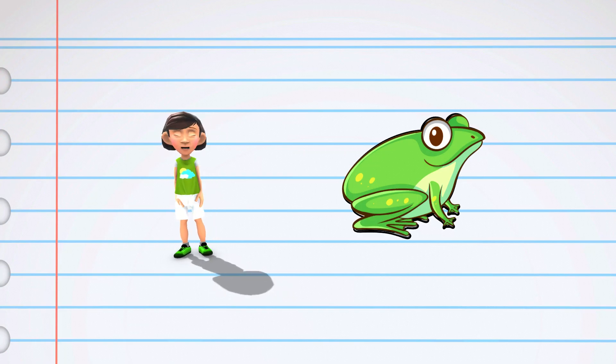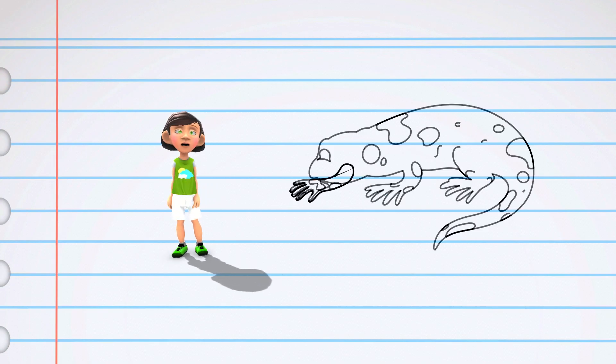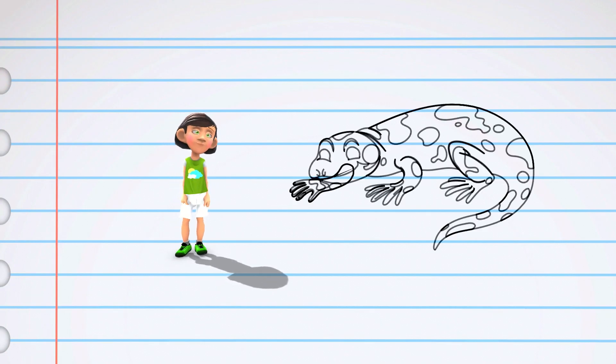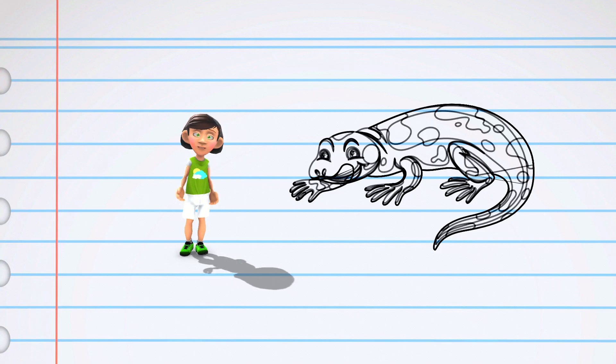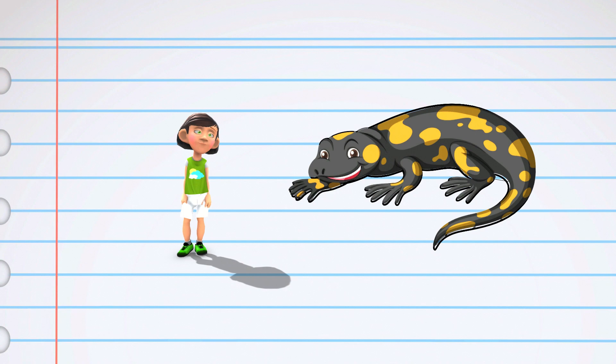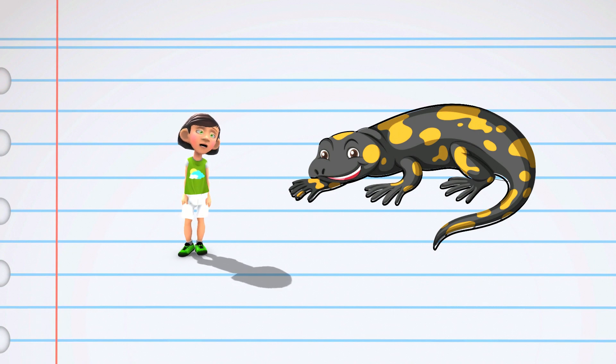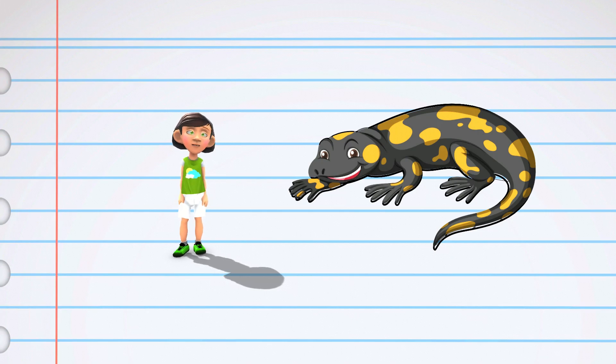Salamanders and newts are unique animals that, like frogs, are also amphibians. They have smooth and moist skin, and some species can even regenerate lost body parts. Salamanders mostly live on land, but some like to hang out near water too. They have four legs and a long tail and move in a snake-like way.